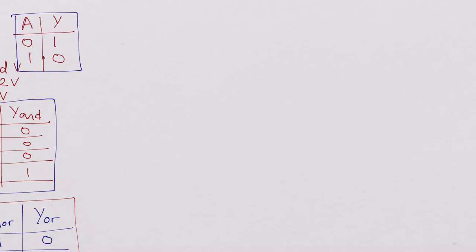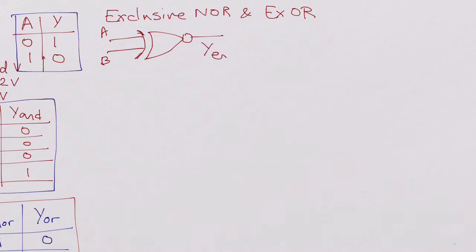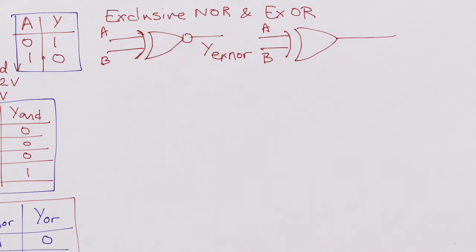Now let's look at the other commonly used gates — the exclusive NOR (XNOR) and exclusive OR (XOR) gates. The exclusive NOR gate is represented symbolically like an OR gate but with an additional curved line at the input, similar to a MOSFET gate symbol, with a bubble at the output. Inputs are A and B, output is Y_XNOR. The exclusive OR gate is represented the same way but without the bubble at the output, with inputs A, B and output Y_XOR.